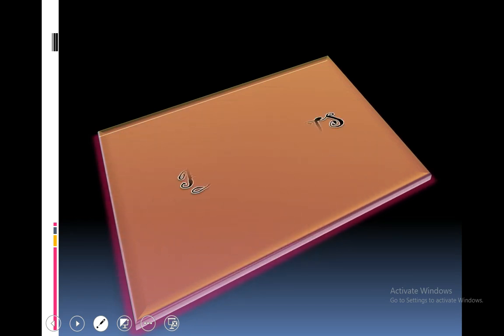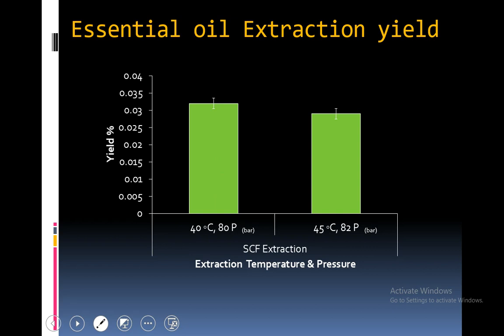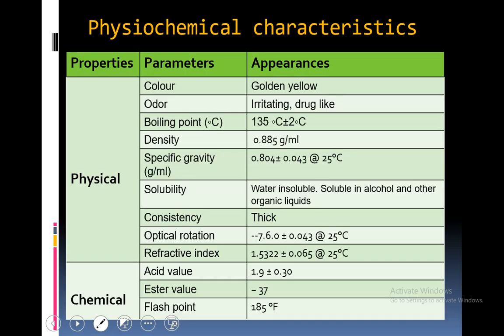Moving to results and discussion: when I extracted essential oil, I found maximum yield at 110°C temperature. By increasing temperature, yield of essential oil decreased, both with hydro distillation and steam distillation methods. At supercritical fluid extraction, maximum yield was collected at 40°C temperature and 80 bar pressure. Various physicochemical parameters were detected — physical and chemical parameters including color, odor, boiling point, density, etc. — as shown in the table.